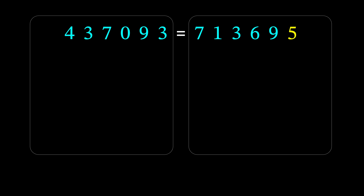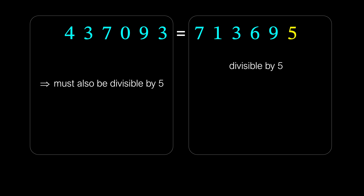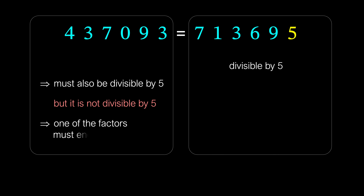No matter where we place the multiplication signs on the right, the last factor will always end with 5, which means that the number on the right will always be divisible by 5. Therefore, the number on the left must also be divisible by 5. For a number to be divisible by 5, one of the factors on the left must end with 5 or 0.